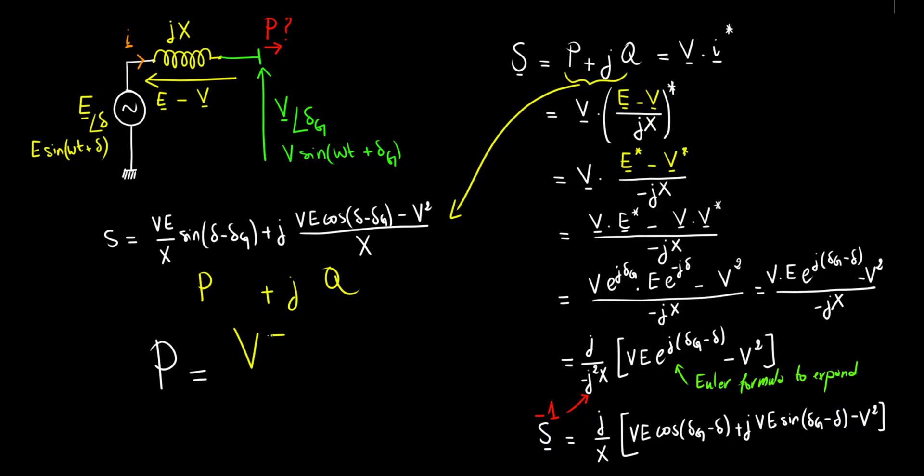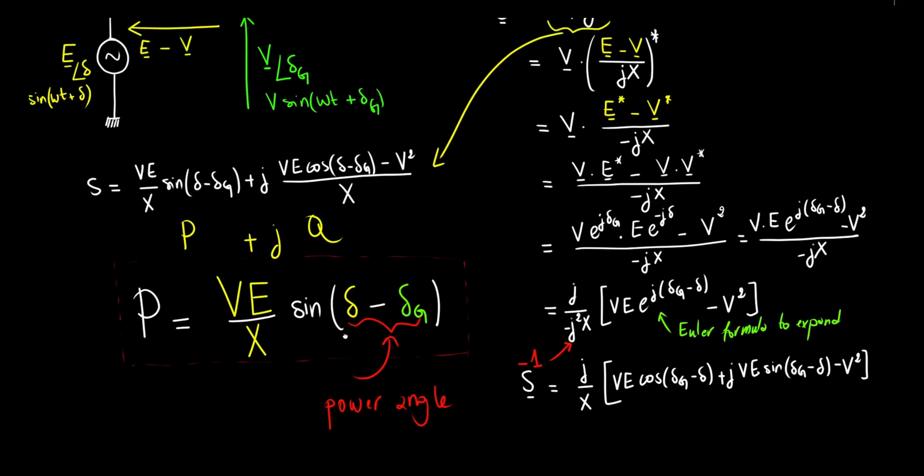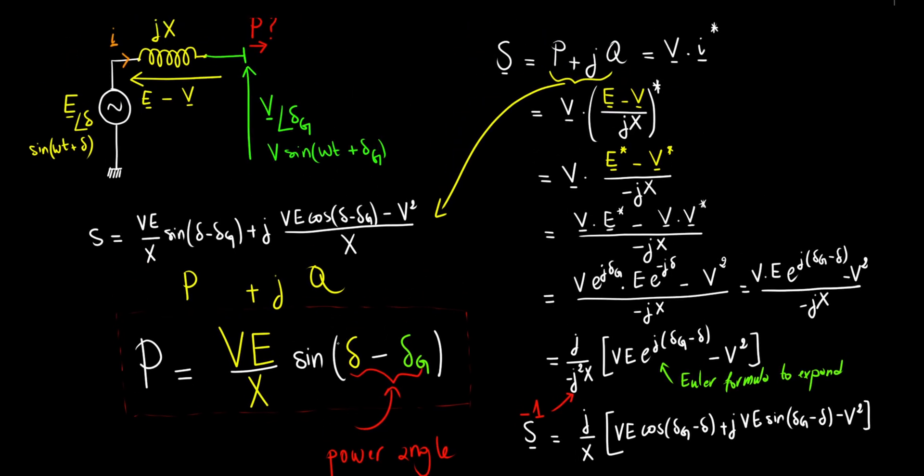Voltage magnitudes multiplied, divided by inductance, times the sine of the difference between voltage angles. We call this difference in angles the power angle, because it literally determines active power flow. Feel free to pause here and double check or replicate these calculations. Now, let's extract meaning from this elegant formula.